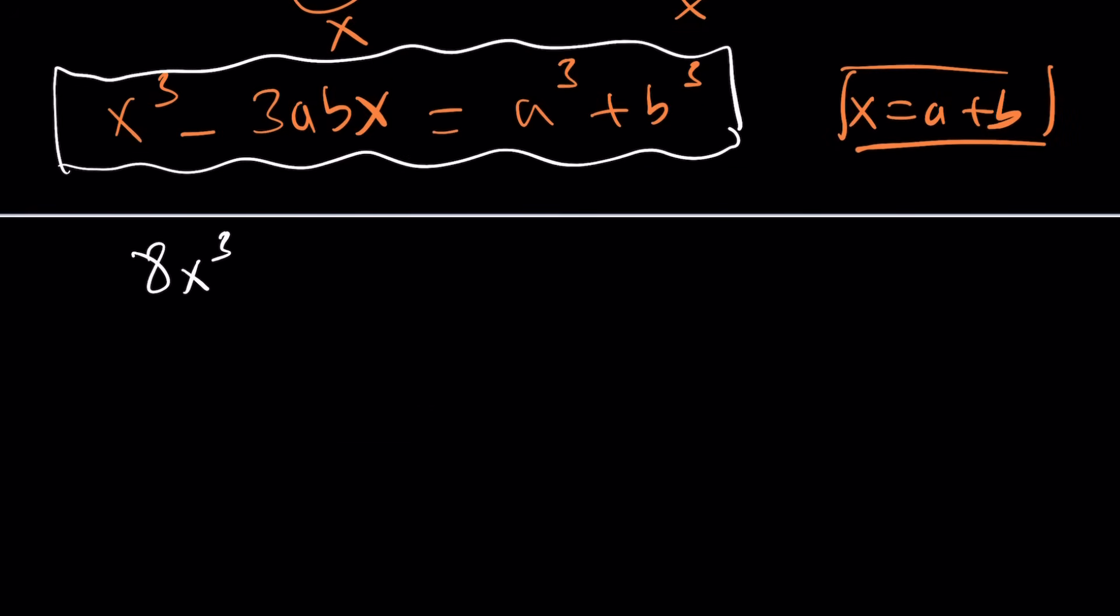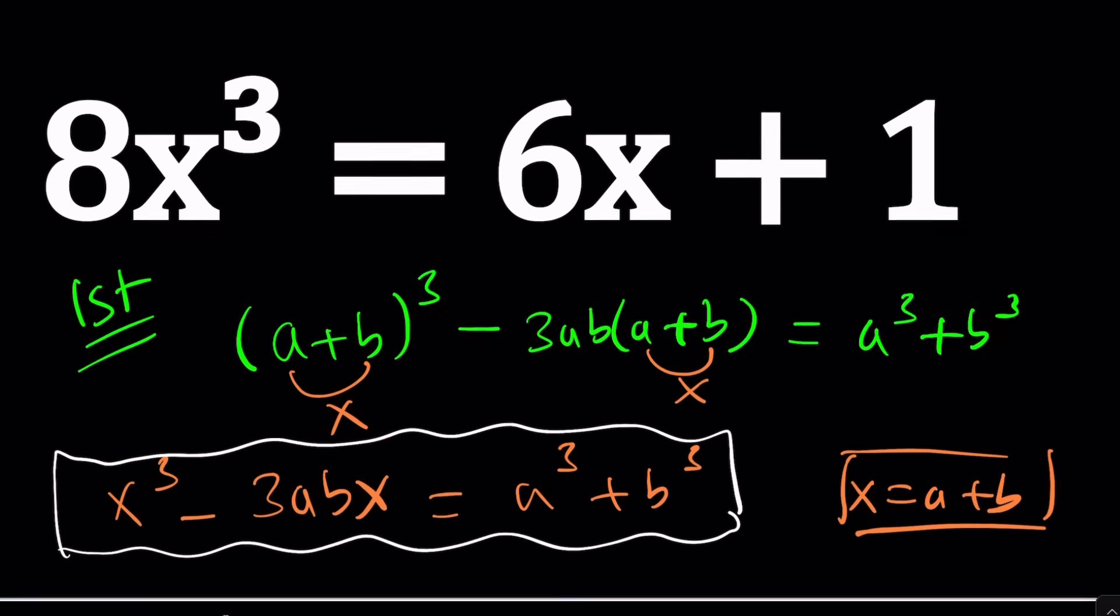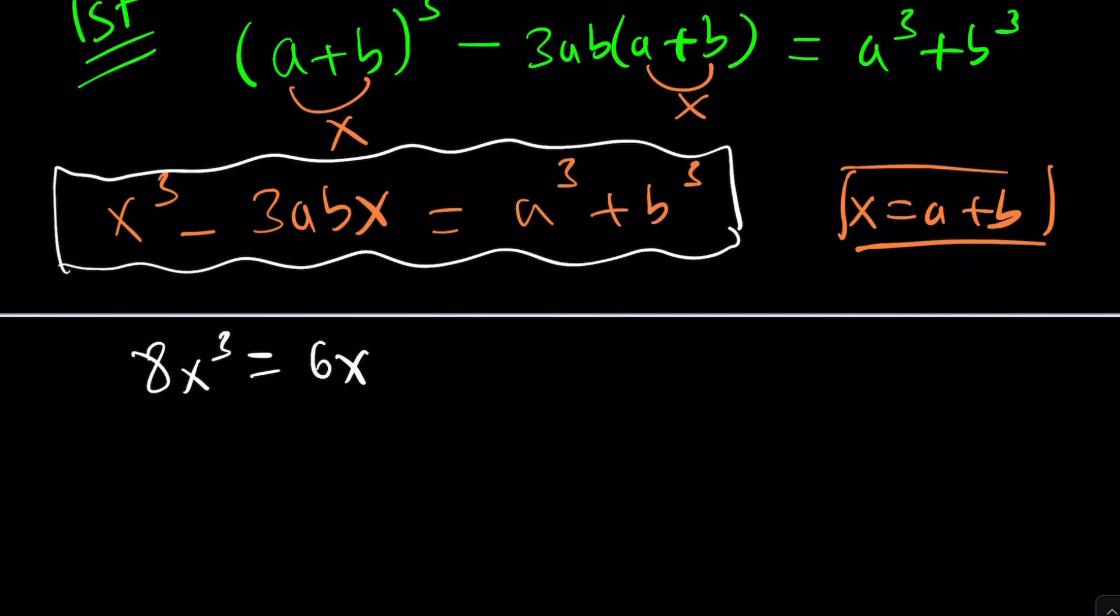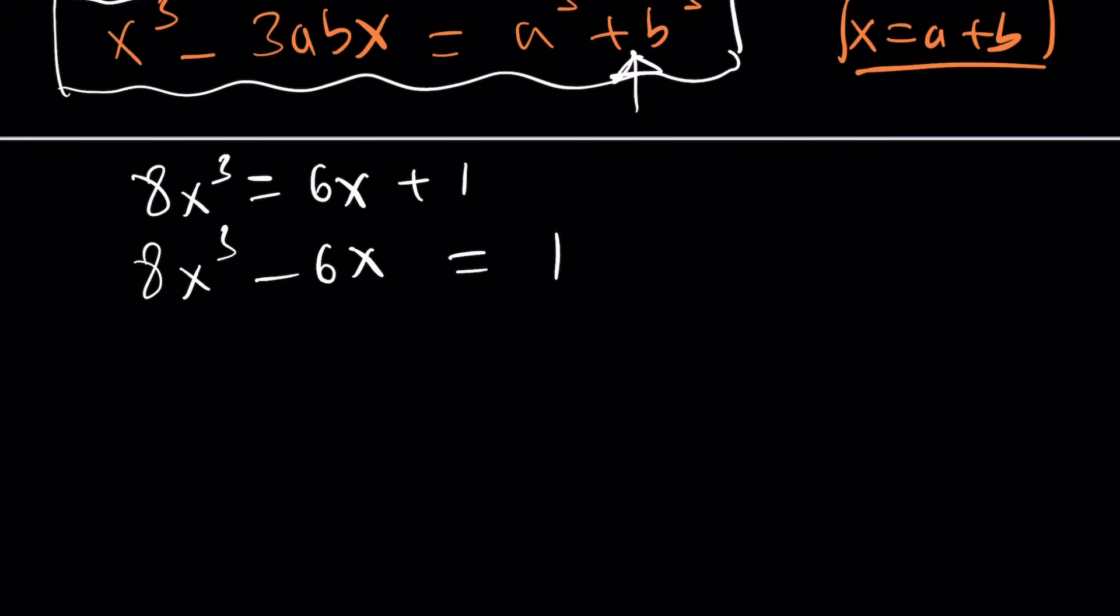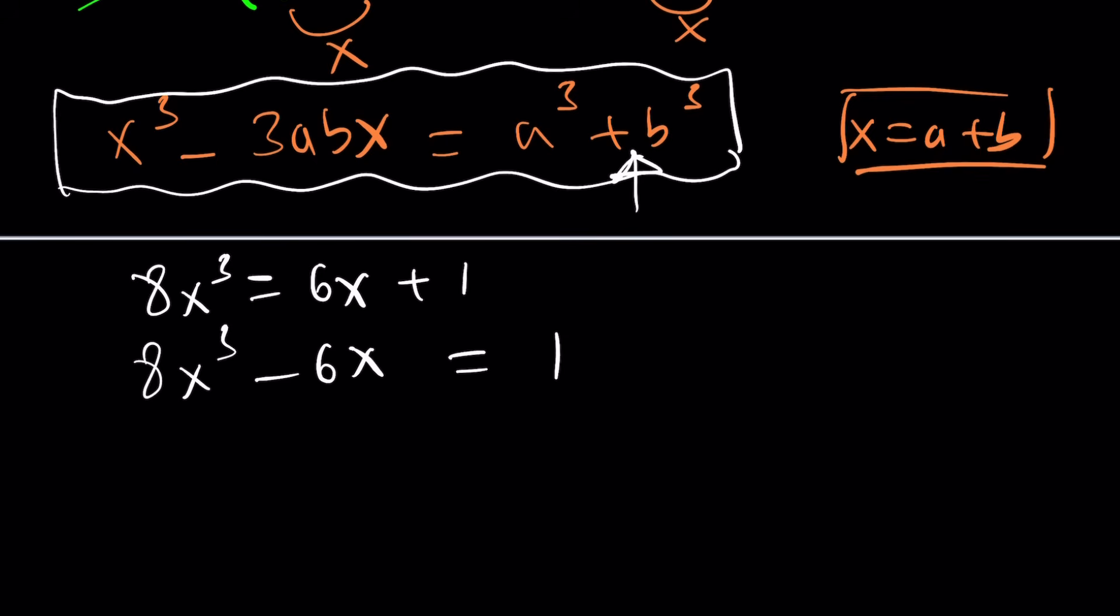We have 8x cubed equals 6x plus 1 and then I will subtract 6x and isolate the constant because I want to have the constant on the right hand side. That's how my identity works. I mean this identity. That's not mine by the way. Someone else found it. Some Italian guy I guess.